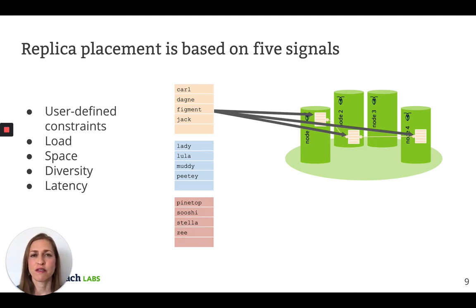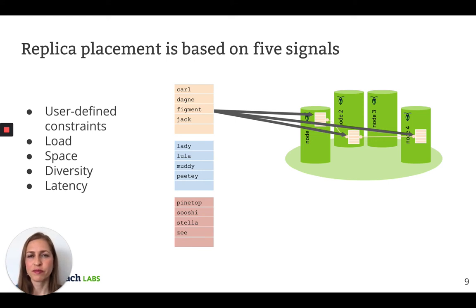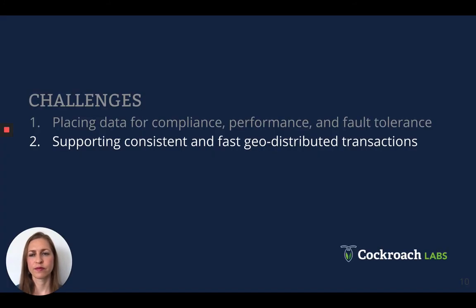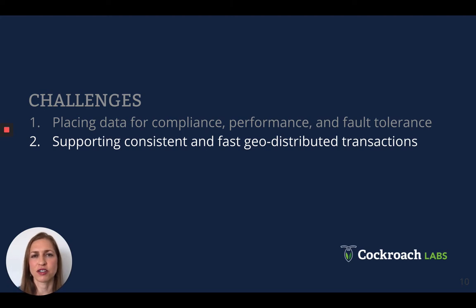Diversity refers to the fact that we try to spread replicas across diverse failure domains to ensure availability in the case of a node, rack, or even a full data center failure. And finally, we try to automatically reduce latency by moving the leaseholder for a range close to its point of most frequent access. Moving on to the next challenge: how do we support consistent and fast geo-distributed transactions?